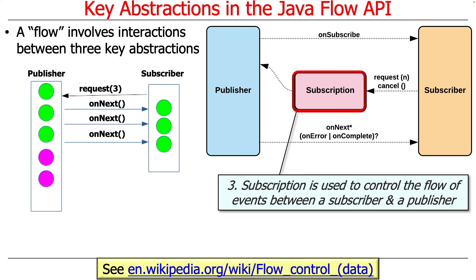The last piece of the puzzle is the subscription interface, which is used to control the flow of events between a publisher and a subscriber. The subscriber tells the publisher how many events it can accept before the publisher must wait for the next request. For example, if the subscriber says send me no more than three events, the publisher will call onNext, onNext, onNext, and then wait for the subscriber to request the next batch — which could be three, five, ten, or whatever. That is how the information flows back and forth.